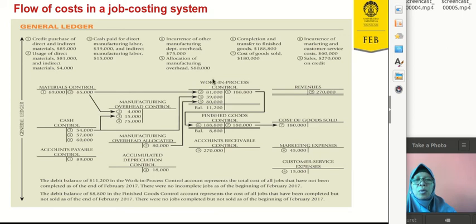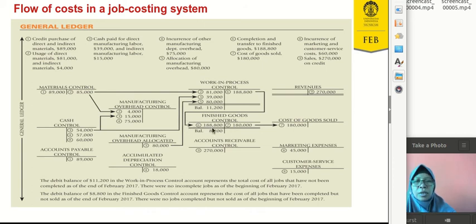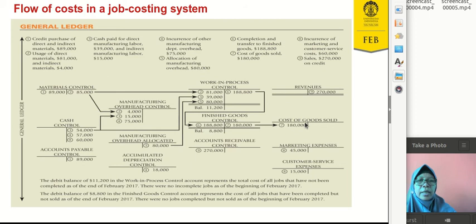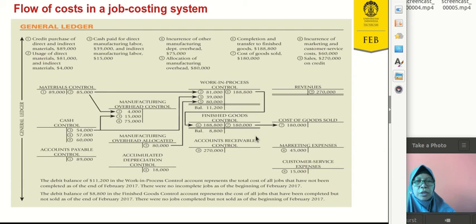From all costs accumulated in work-in-process — say $188,800 — when finished, we assign it to finished goods, with the rest staying as ending WIP inventory. When finished goods are sold, we transfer them to cost of goods sold, with the remainder staying in finished goods inventory. For cost of goods sold, we also account for revenues, marketing expenses, customer service expenses, and other expenses, all of which flow to the income statement.